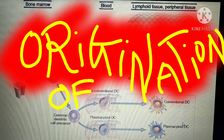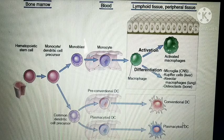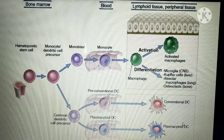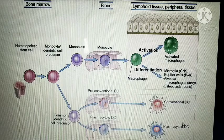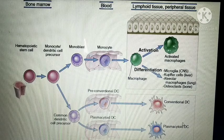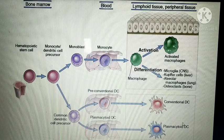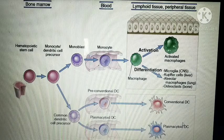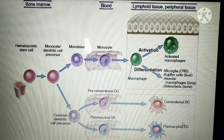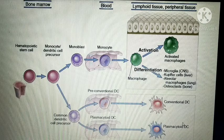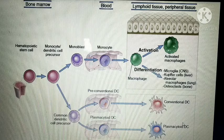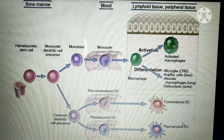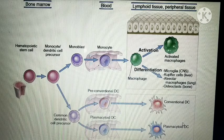In my previous lectures I told you how B cells and T cells originate in the body. B cells, as the name starts with the alphabet B, they mature inside the bone marrow. T lymphocytes mature inside the thymus. Note that both B lymphocytes and T lymphocytes — almost all the cells of the blood — arise from the bone marrow.